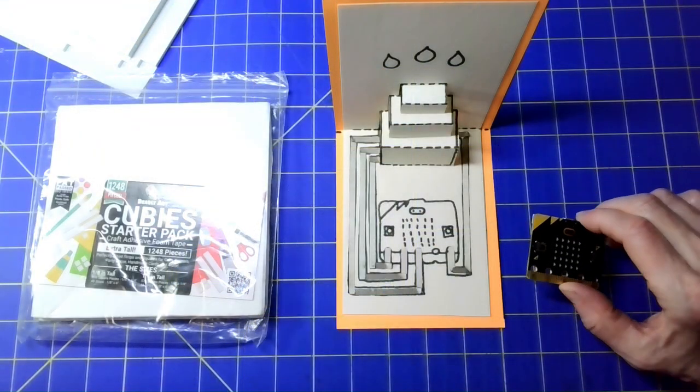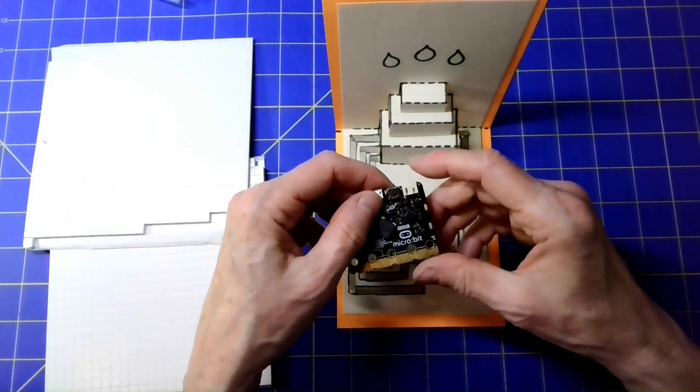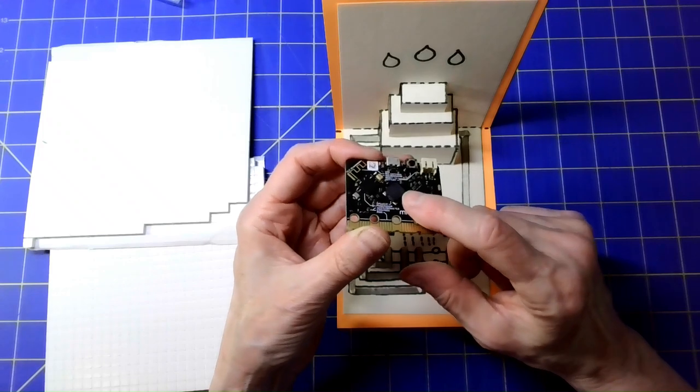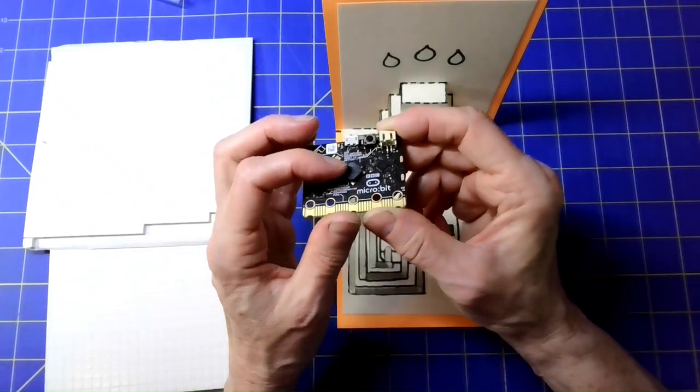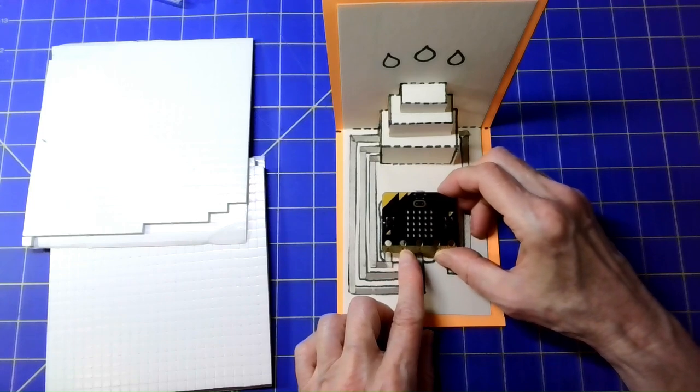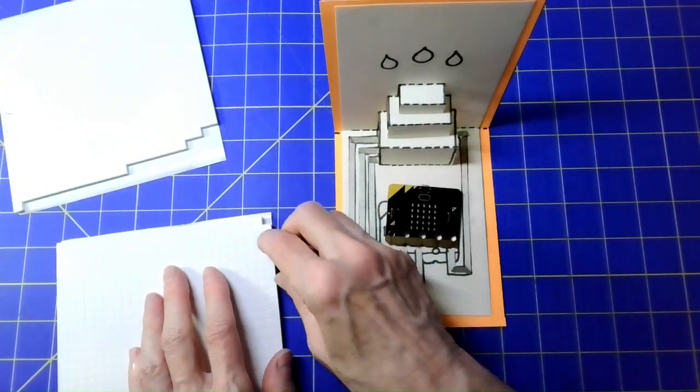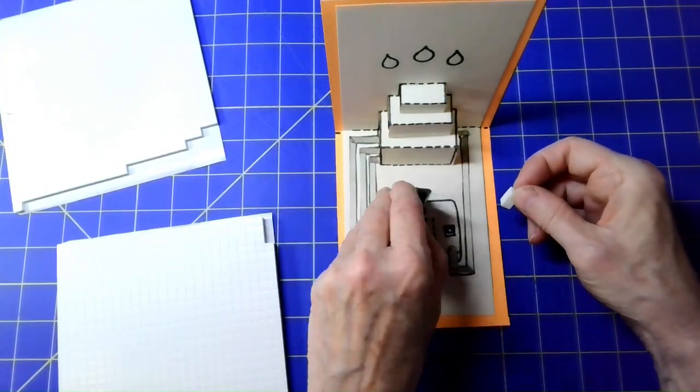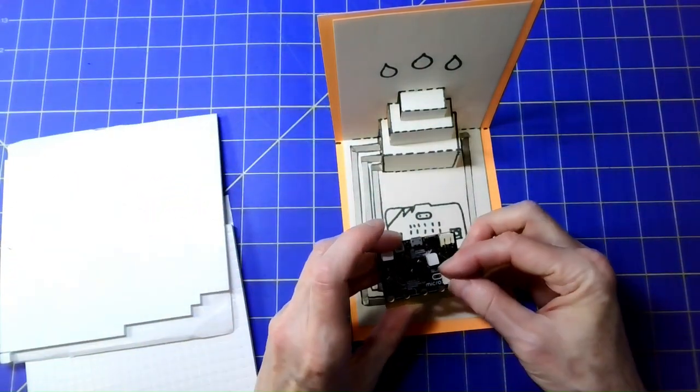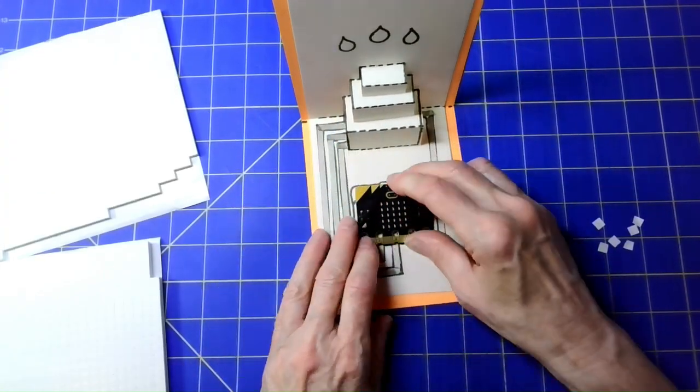To attach the microbit to the card where it needs to go, I'm going to use some of these Barely Art Cubies. And the back of the microbit has some pretty high components that we need to make clearance for. We also want to have clearance for the speaker so that we can hear the sound coming out. So we're going to use these little foam squares to lift the microbit off of the surface of the card a little bit so we can hear the sound. Let's try using the bigger ones. Alright, that looks pretty good.